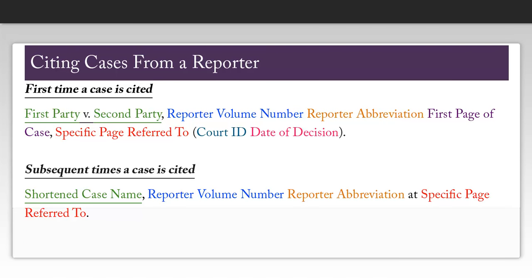One citation you will probably use quite often is that for citing cases that come from a reporter. The first time you cite a case, you need the first party and second party involved, the reporter volume number, the reporter abbreviation, the first page of the case, the specific page referred to, the court ID, as well as the date of decision. The reporter is the book that this case can be found in. Sometimes it can be found in more than one, so you'll want to double check if your professor would like you to include parallel citations.